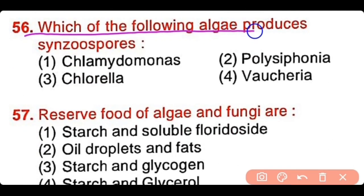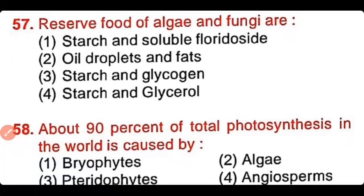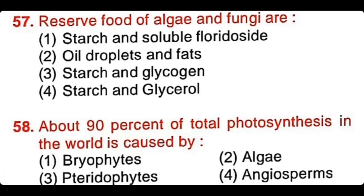Question number 56: Which of the following algae produces synzoospores? Chlamydomonas, Polysiphonia, Chlorella, or Vaucheria? The correct answer is option 4. Vaucheria, which belongs to yellow-green algae, has synzoospores. They are multi-flagellate spores also known as synzoospores.